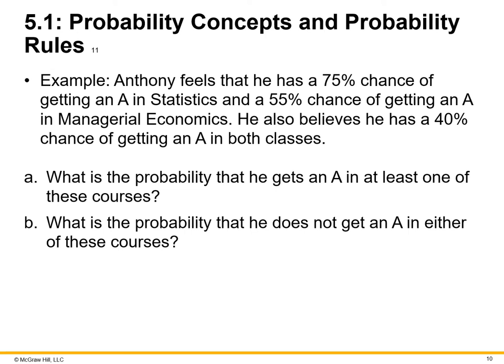Here's an example. Anthony feels that he has a 75% chance of getting an A in statistics and a 55% chance of getting an A in managerial economics. He also believes he has a 40% chance of getting an A in both classes. So what is the probability he gets an A in at least one of these courses? And what is the probability he does not get an A in either of these courses?